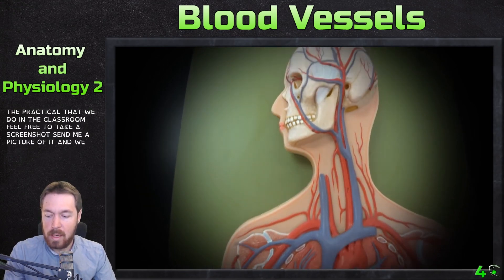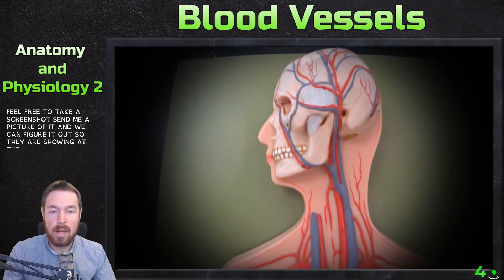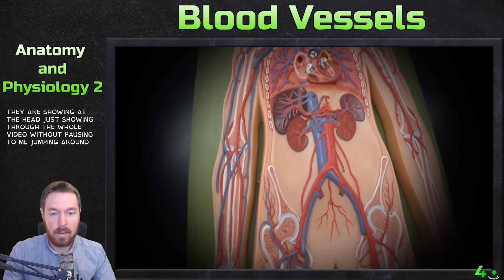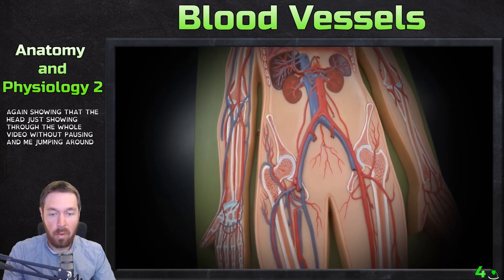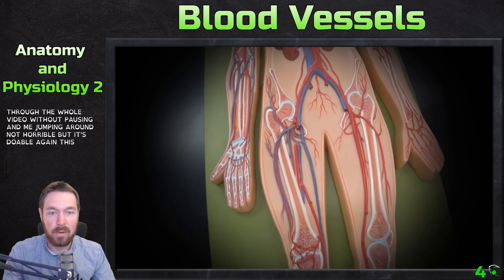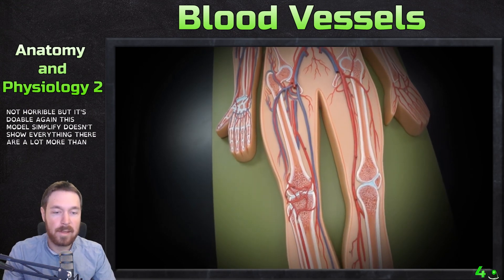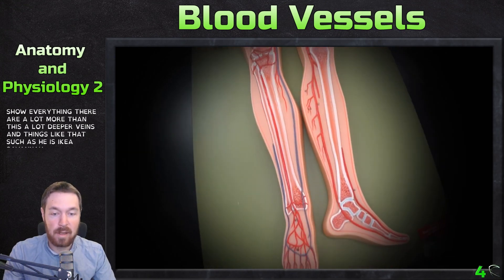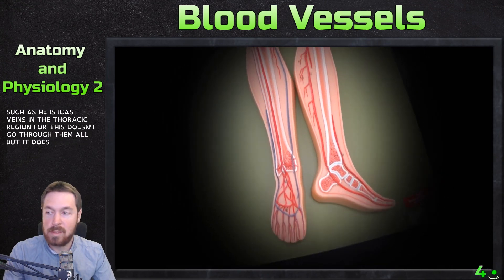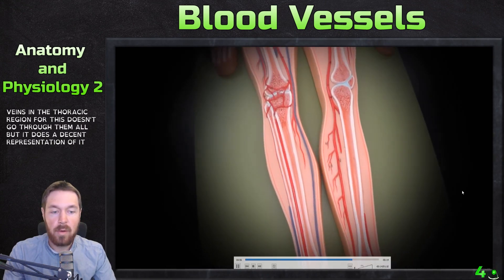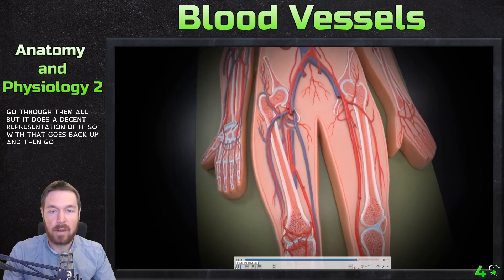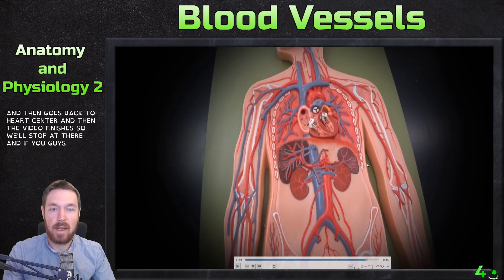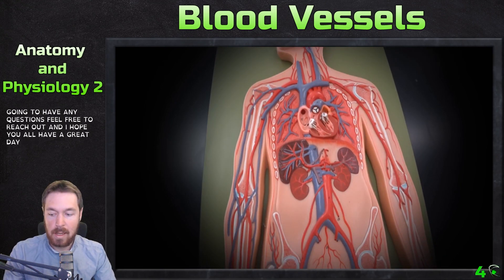The model is simplified and doesn't show everything — there are a lot more vessels and deeper veins, such as the azygos veins in the thoracic region. But it does provide a decent representation. With that, the video goes back to the heart and finishes. If you have any questions, feel free to reach out. I hope you all have a great day!